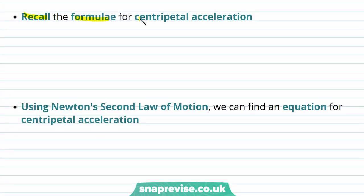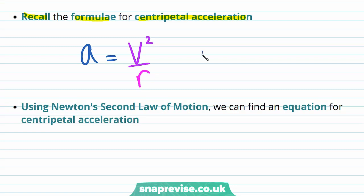Let's recall the formulae for centripetal acceleration. Centripetal acceleration A is equal to instantaneous velocity squared divided by radius R, and centripetal acceleration is also equal to angular velocity squared times radius R.